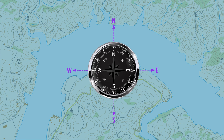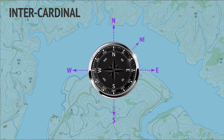Or an inter-cardinal direction that lies in between — north-east, south-east, south-west, or north-west. We could bisect these directions further, giving directions like north-north-east or west-south-west.